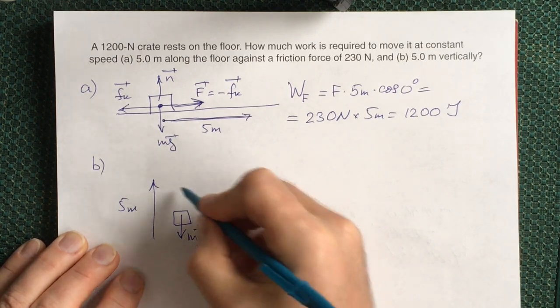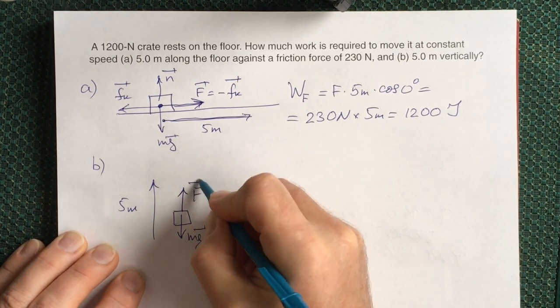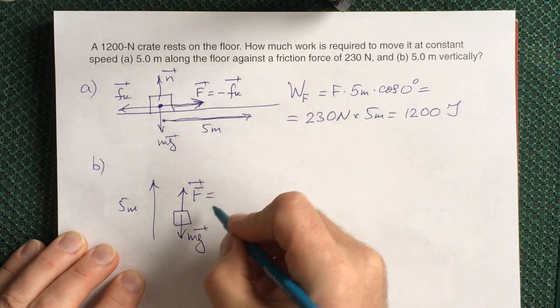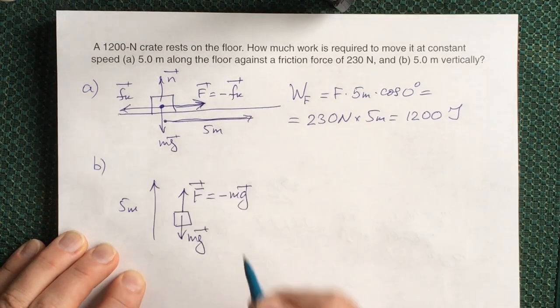If you want to move your crate without any acceleration, the force you have to apply has to be equal to the mg force but oppositely directed.